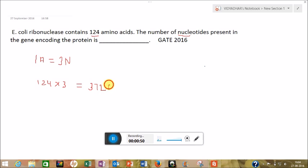So we'll get 372 nucleotides. One thing you should know is that in translation of mRNA into protein, the stop codon does not code for any amino acid.